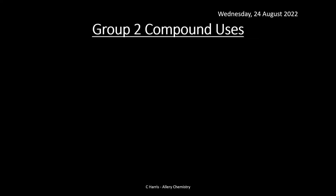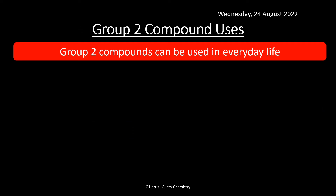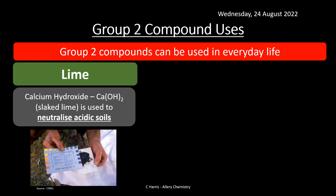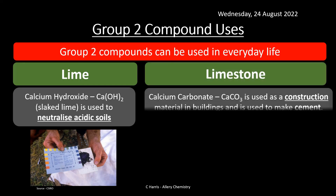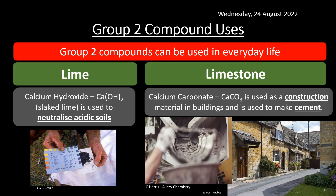Finally, let's look at some uses. Group 2 compounds are used in everyday life. Calcium hydroxide, also known as slaked lime, is used to neutralize acidic soils — important for farmers who want to maximize crop yield by ensuring the soil pH is optimal, spraying calcium hydroxide onto the soil before growing the crop. Calcium carbonate (limestone) is used in construction materials and buildings — it can be used to make cement, and stone cottages are a classic example of limestone being used as a building material.